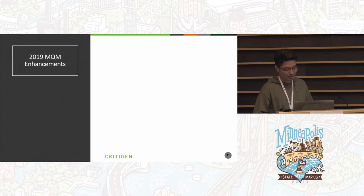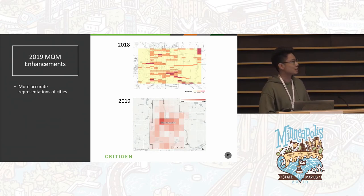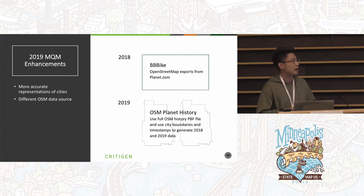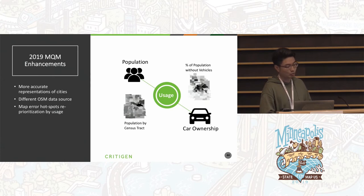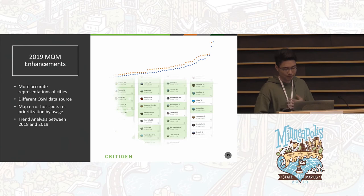This year we made enhancements. Last year we used a user-defined bounding box to represent a city, which was not very accurate. This year we use the city boundary as our data extent. Instead of extracting OSM data using a bounding box, we pulled the full OSM history PBF file and used city boundaries and timestamps to generate data for 2018 and 2019. We also incorporated socioeconomic factors to reprioritize hotspots by usage, and with two years of data we reran results using 2018 and 2019 to enable trend analysis.